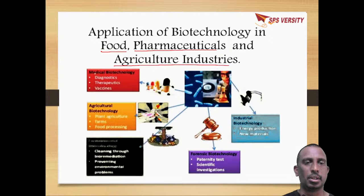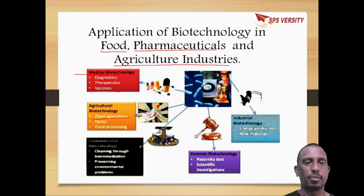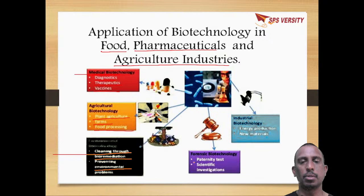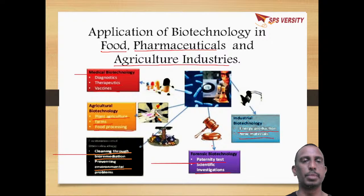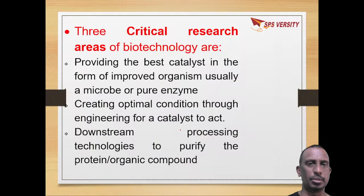In medical biotechnology: diagnostics, therapeutics, and vaccines. In agriculture biotechnology: plant agriculture, farming, and food processing. In environmental biotechnology: cleaning through bioremediation and preventing environmental issues. Forensic biotechnology covers paternity tests and scientific investigations. Industrial biotechnology covers energy production and production of new materials. There are a lot of applications of biotechnology in various fields like agriculture, food industry, pharmaceuticals, industrial biotechnology, environment, and forensics.